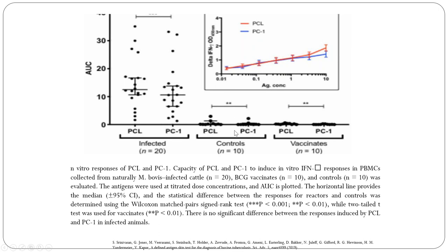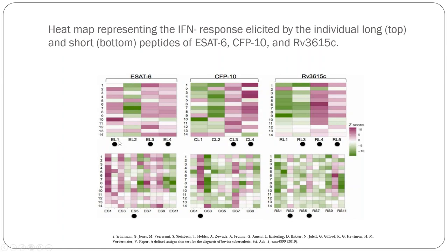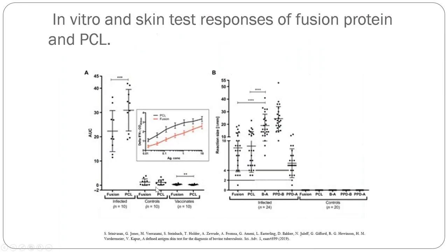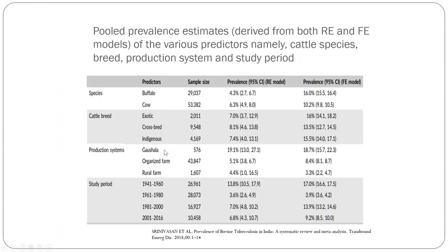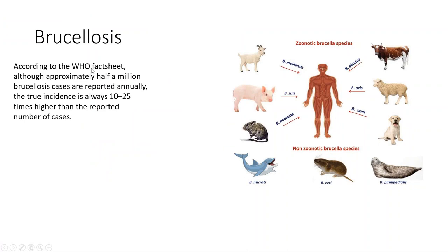We now have, for vaccinated and unvaccinated animals, an antigen which will differentiate them. We are now immunizing these cattle and looking at what the predictors will be for these cattle breeds. The study is ongoing and we don't have the data yet. But this is the data showing how bovine tuberculosis is spread across different states in India.